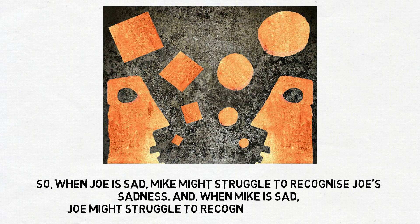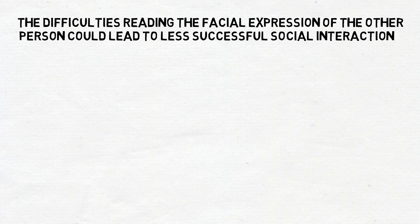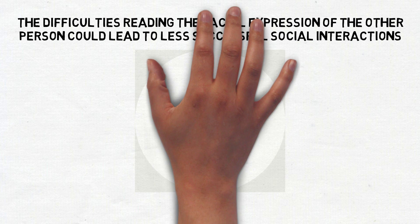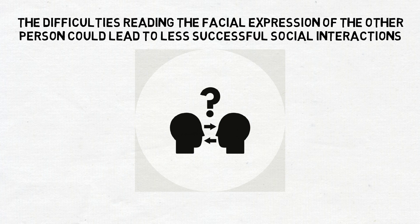And conversely, when Mike is sad, Joe might struggle to recognise Mike's sadness. And this difficulty in reading the facial expression of the other person could lead to less successful social interactions or even social difficulties.